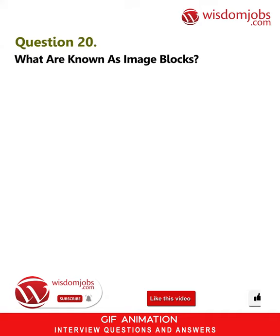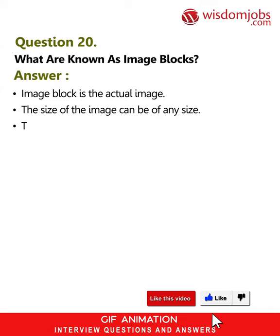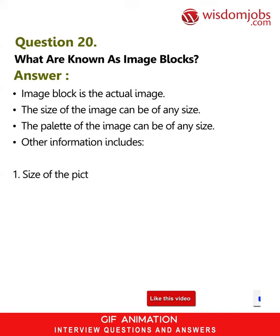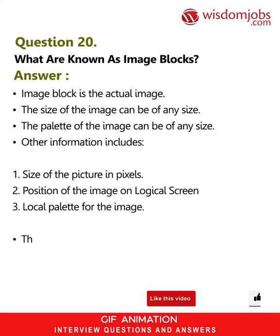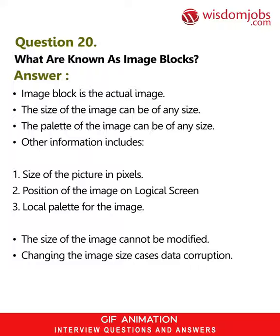Question 20: What are known as image blocks? Answer: An image block is the actual image. The size of the image can be of any size. The palette of the image can also be of any size. Other information includes: one, size of the picture in pixels; two, position of the image on the logical screen; three, local palette for the image. The size of the image cannot be modified — changing the image size causes data corruption.